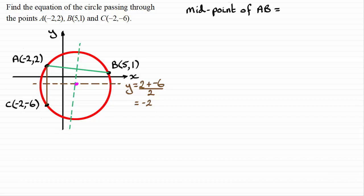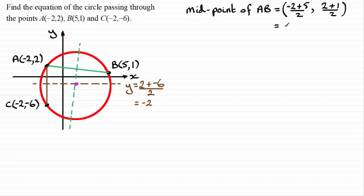For the midpoint of AB, I take the mean of the x-coordinates and the mean of the y-coordinates. The x-coordinate is (−2 + 5) / 2, and the y-coordinate is (2 + 1) / 2. Working that out gives 3/2 and 3/2, so the midpoint is (3/2, 3/2). I'll leave it in that fractional form as it's much easier to work with.